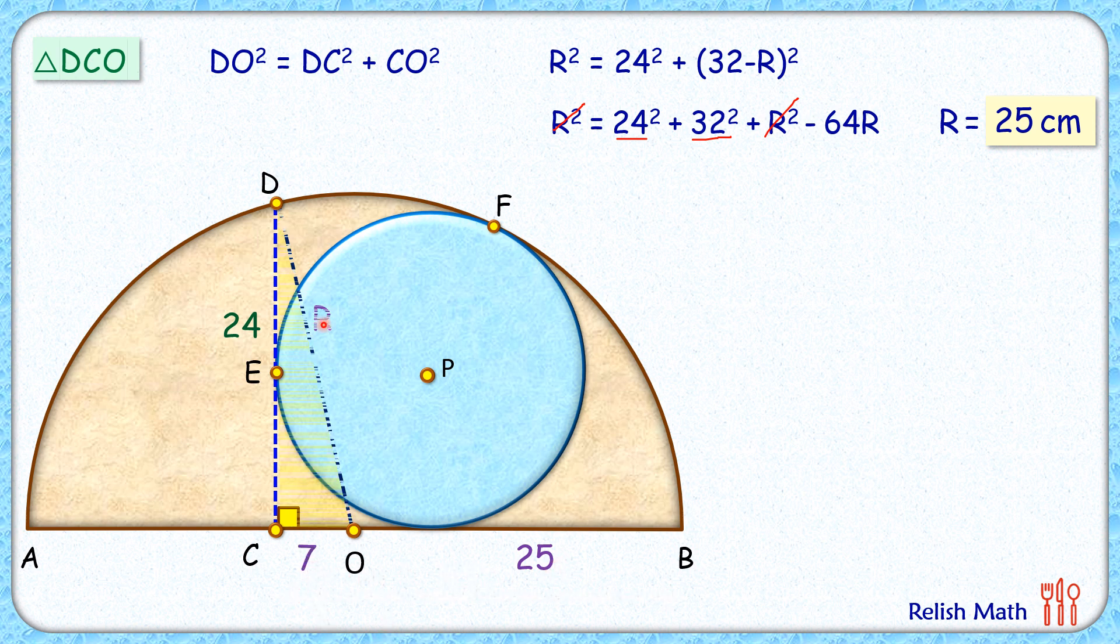Now let's remove this triangle. Now this semicircle and the circle are touching at point F. So by theorem, the centers of these two circles and the point of contact will lie in a straight line.